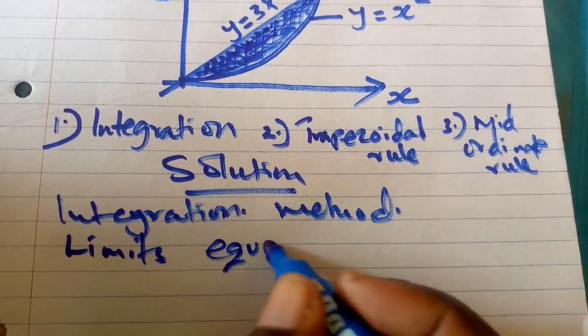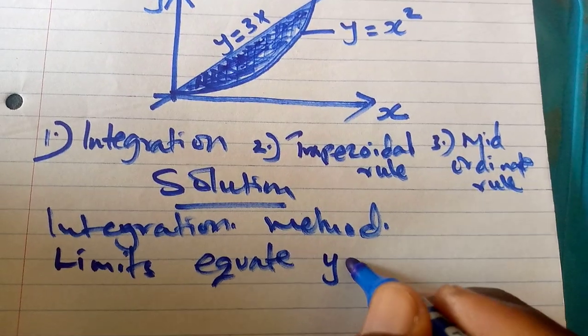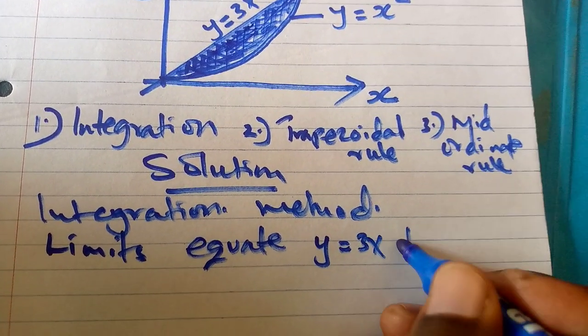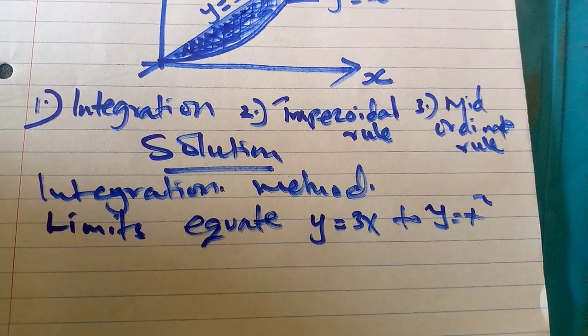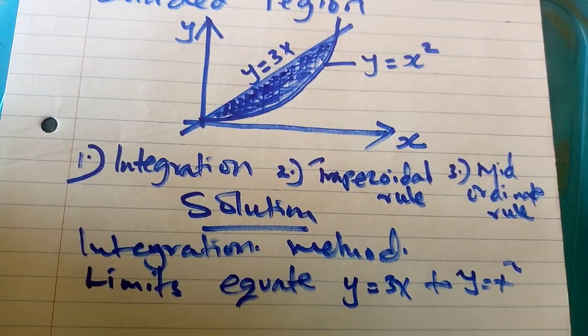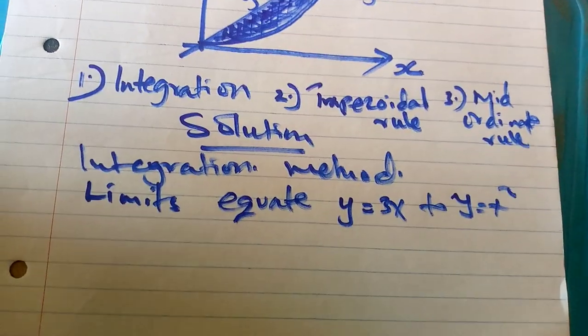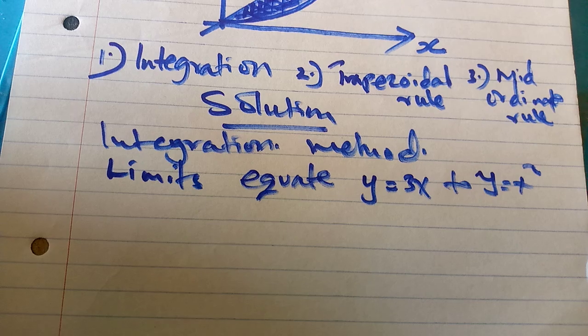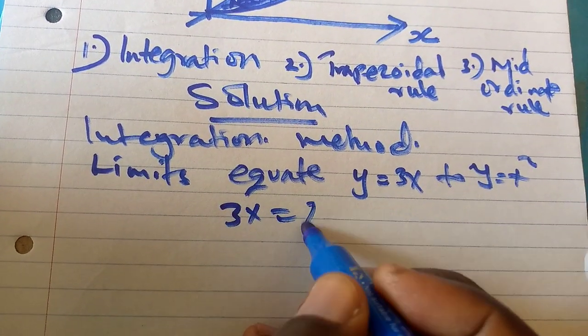So for us to get the limits, I'll equate y equals 3x to y equals x squared so that I'm able to get the limits where the shaded region lies.